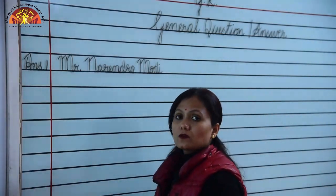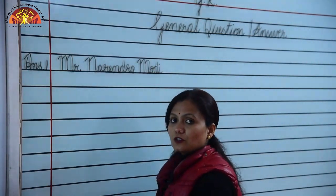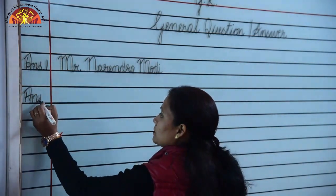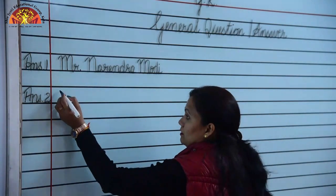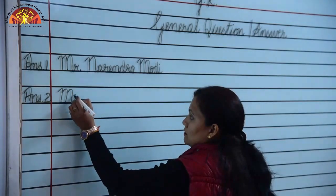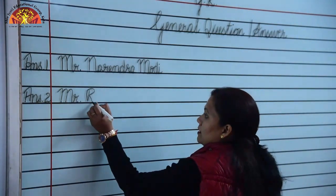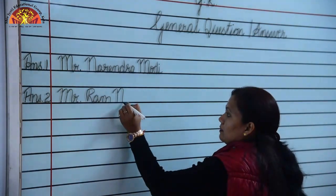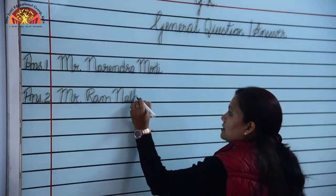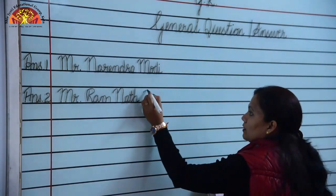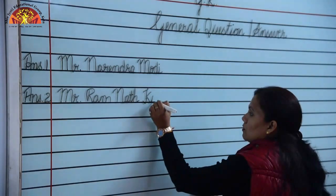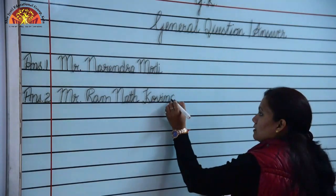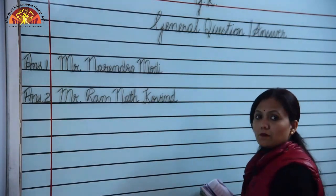Question 2: Who is the President of India? Answer: Mr. Ram Nath Kovind. Spelling: R-A-M, K-O-V-I-N-D. Mr. Ram Nath Kovind.